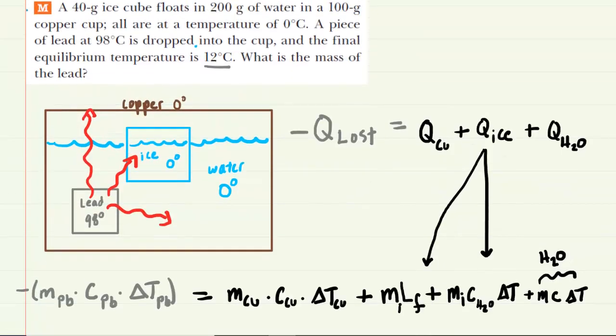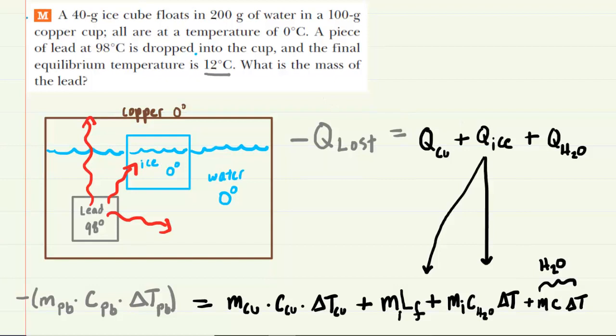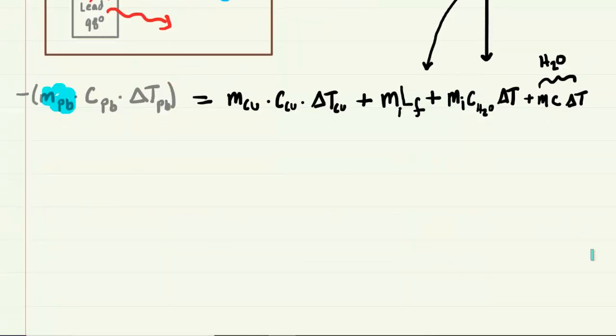Now, let's not forget what our goal is in this problem. It wants the mass of the lead. So we're looking for this value right here, which presumably means we know every other value. And we actually do. Let's look up some of these specific heat capacities.